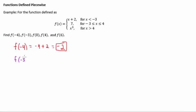f of negative 3. If it's less than negative 3, it's the first equation, but negative 3 is not less than negative 3, it's actually equal to negative 3, which means we have to put it into this middle one where we have this equal to symbol, meaning that negative 3 is equal to negative 3, so it fits into this spot.